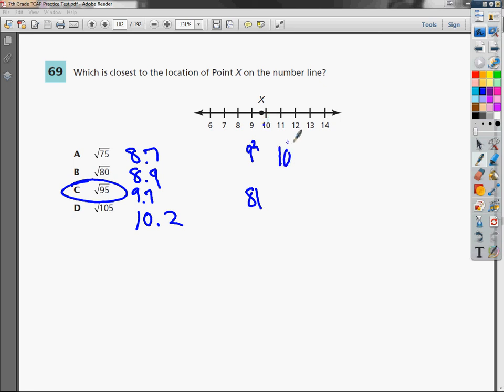10 squared is 100. What I'm going to do is just look under the radicals for a number that falls between 81 and 100.